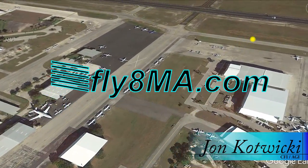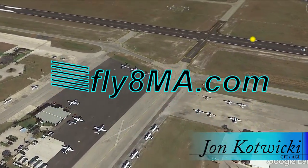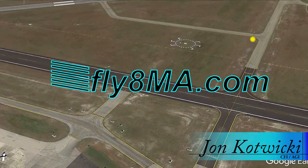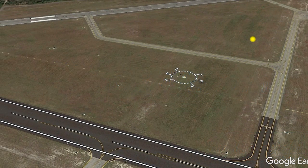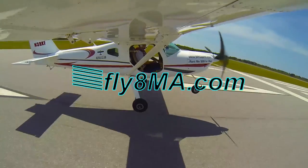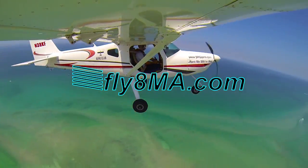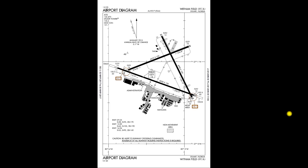Hey guys, John from flightmikeelf.com. Today we're going to be looking over some more complicated airport diagrams — how to interpret them, what all the symbols mean, and how to navigate around a slightly more complex airport. We're taking a look at the airport diagram for Witham Field in Stewart, Florida. KSUA is the airport, and as you can see there are a few different symbols on here that you don't typically see on your average airport diagram.